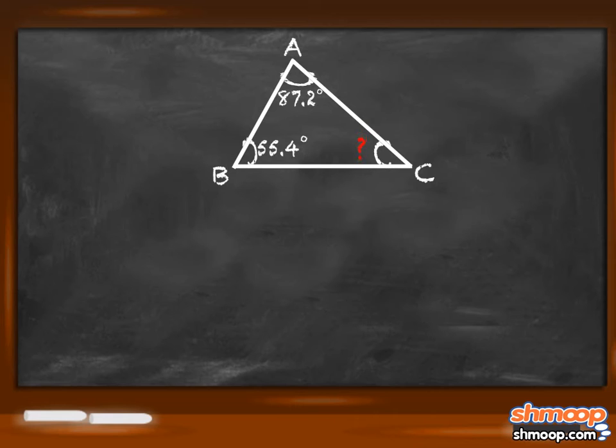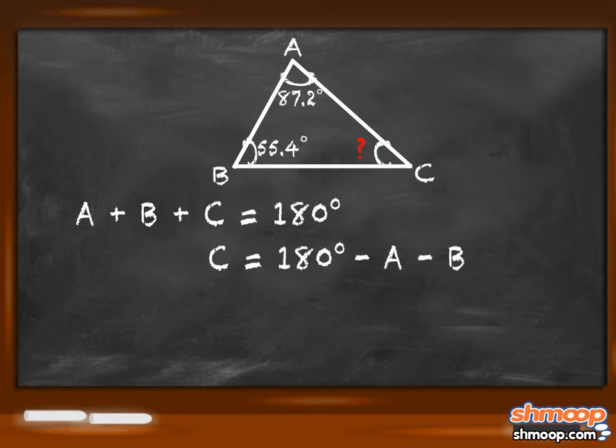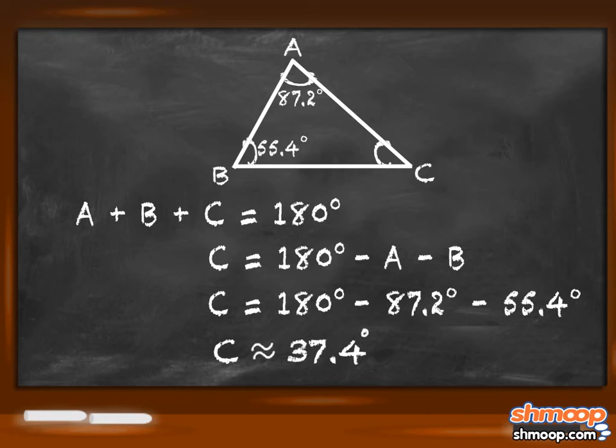We can find the last angle with Law of Cosines, but there's an easier way. We know that all the angles in a triangle total 180 degrees. So we can just take 180 degrees minus 87.2 minus 55.4 to find angle c, which gives us 37.4 degrees.